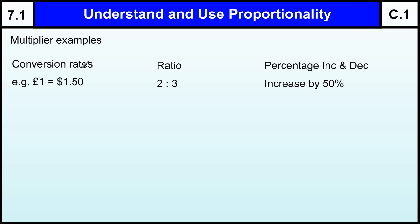So if I'm looking at three examples, conversion rates is the first one. If I'm converting from pounds to dollars, a conversion rate of 1 to 1.50, then if I've got £6, what do I times by to get the number of dollars?